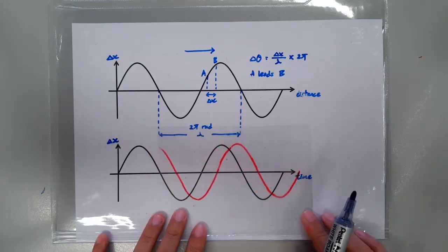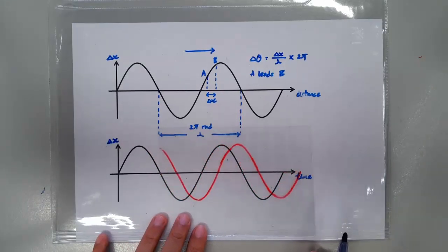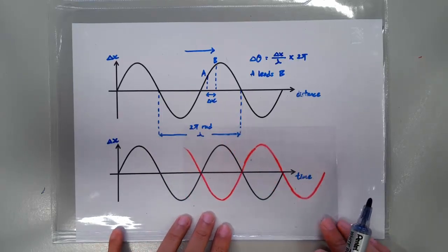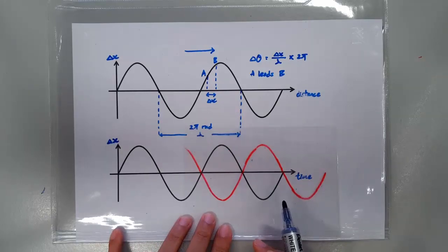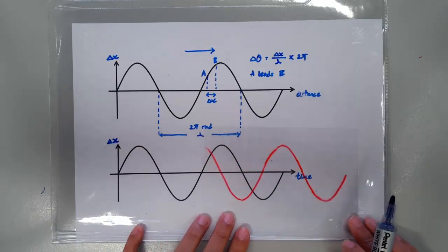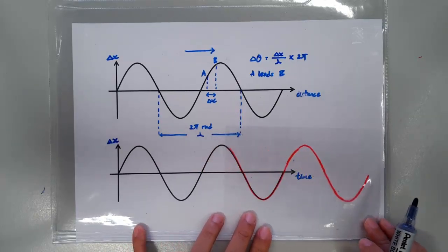If these two graphs are misaligned by a quarter of a cycle, then the phase difference is π/2. If they are completely out of phase, then the phase difference would be π, and this would be 3π/2, and this would be 2π, and so on.